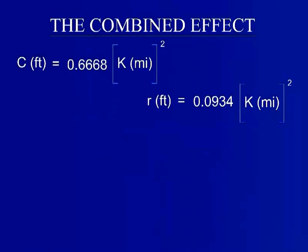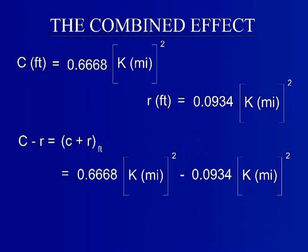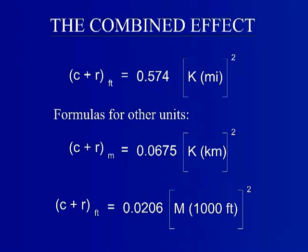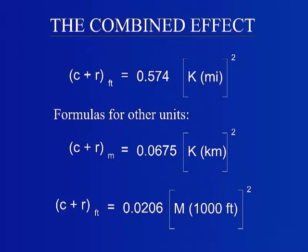Recall that uppercase C and R are functions of k. Subtract r from uppercase C to find c plus r. The constant in front of k is based on the relationship of k given in miles and c plus r in feet. Therefore, this constant will be different depending on the units of the given information and the units intended for the solution.